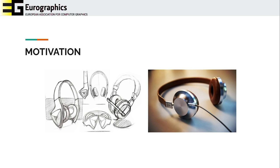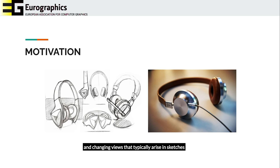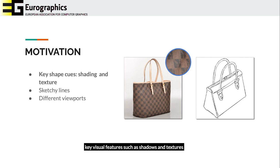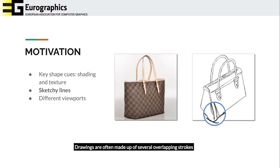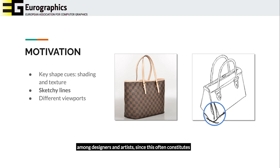Finding correspondences between images is a well-known problem in computer vision. In particular, matching line drawings is a very challenging and underexplored problem due to the diversity of styles, distortions in projections, and changing views that typically arise in sketches and hand drawings. In comparison with photographs, working with sketches comes with a lack of shape cues and key visual features such as shadows or textures. Additionally, projections are often rough and imprecise. Drawings are often made up of several overlapping strokes which are generally rough and do not enclose the shape tightly. Strokes also change significantly among designers and artists, since this often constitutes their style and personal signature.